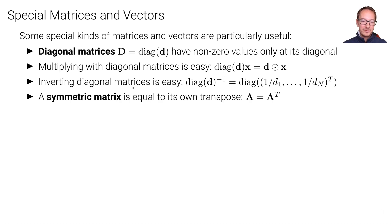A symmetric matrix is a matrix that is equal to its own transpose. So we can write A equals A transpose.